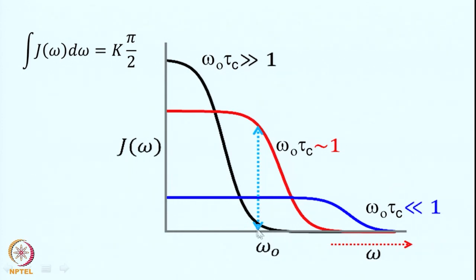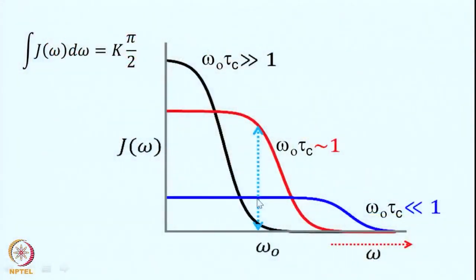Note that this relative sensitivity assumes the same number of spins and does not include natural abundance. The relative sensitivity is based on μ³. The gyromagnetic ratio of proton to carbon-13 is about 4:1, so 4³ = 64, making carbon-13 nearly 1/64 as sensitive as proton. Including natural abundance gives the absolute sensitivity. Because of these sensitivity differences, NMR, while elegant, is also a very insensitive technique requiring large amounts of sample for quality spectra. This concludes the first chapter on basic NMR concepts.